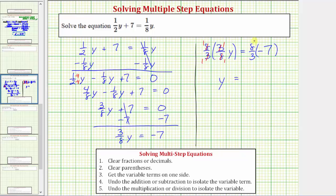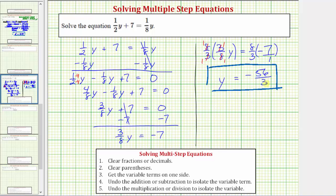On the right side, we have eight-thirds times negative seven. Written as a fraction, negative seven has a denominator of one. Nothing simplifies, so we multiply the numerators and denominators: eight times negative seven is negative 56, and three times one is three. Our solution is y equals negative 56-thirds. This is in simplest form because the only common factor between 56 and three is one.